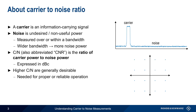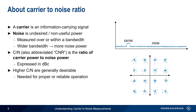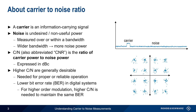For example, the points on this signal constellation will become less distinct or more spread out as the carrier-to-noise ratio decreases. In addition, as modulation order — that is, the number of states or symbols — increases, the carrier-to-noise ratio normally must also increase in order to maintain the same bit error rate.